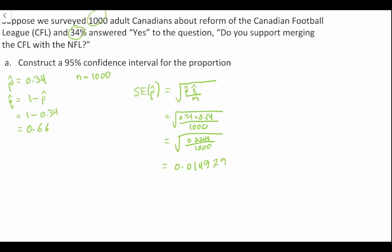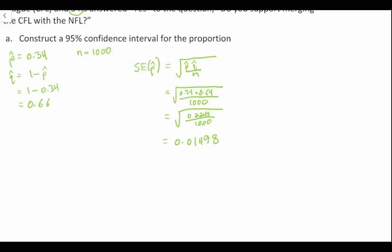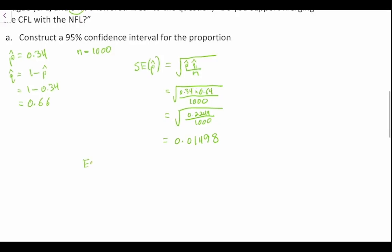Why don't we keep this to four decimal points, and we'll say 0.01498. So we have our standard error. Now we need to calculate our confidence interval. Our equation for our confidence interval is the following: our estimate plus or minus our margin of error.